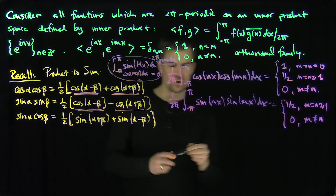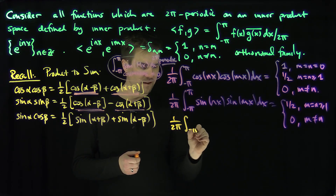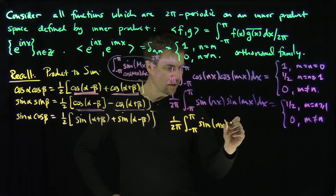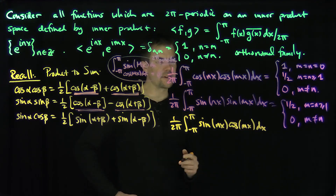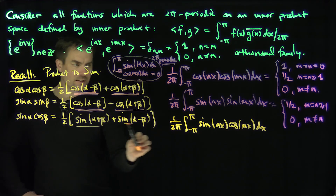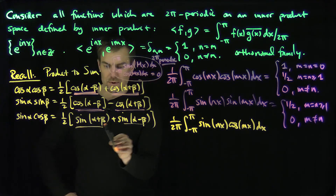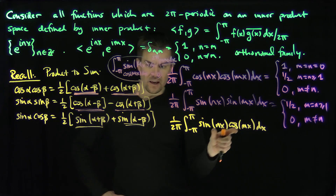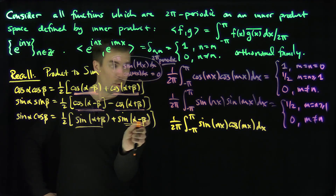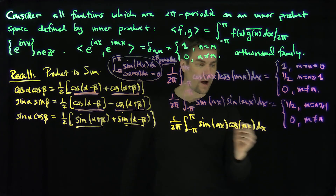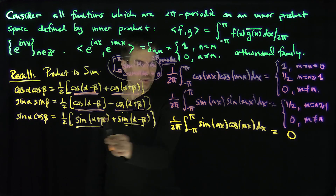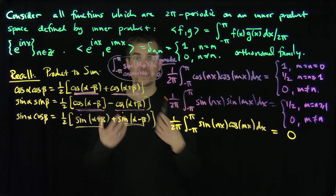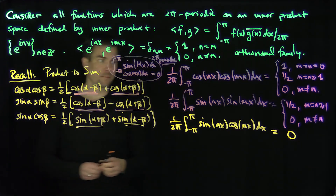Now let's do the mixed term: (1/2π) times the integral from −π to π of sine(nx)cosine(mx) dx. Using the product-to-sum formula, we get sine terms which integrate to cosine terms. No matter what m and n are, this expression integrates to cosine(m + n)x and cosine(m − n)x terms, both of which are 2π-periodic and cancel when integrated over [−π, π]. So the sine-cosine inner product is always 0.